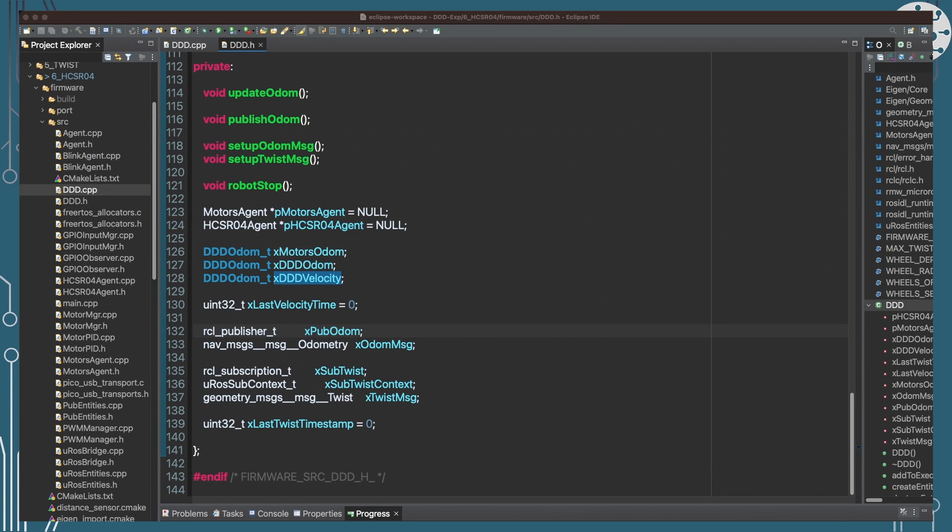So over in the code, all of the Odometry code is really being controlled from DDD class. So we've got here the definition of the Odometry message and the publisher for sending out that message.